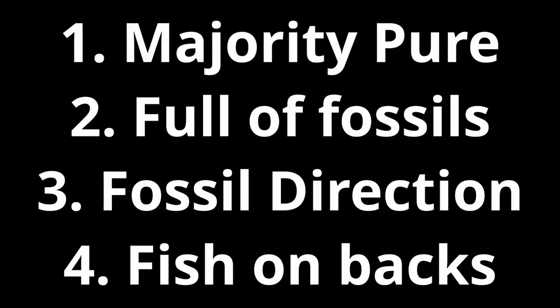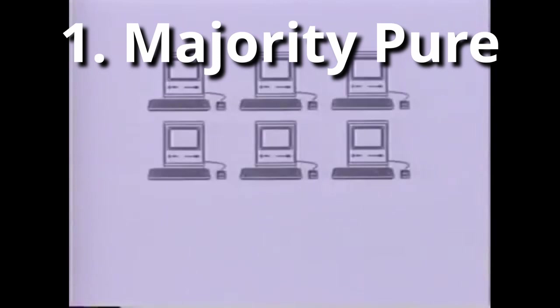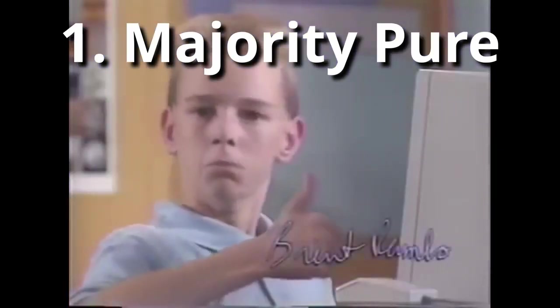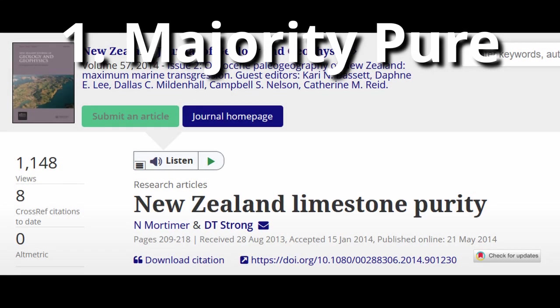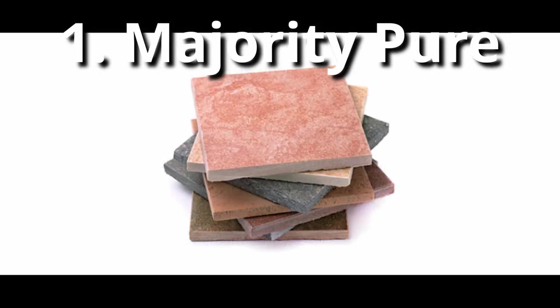And now we get to fish poop — somehow fish poop disproves the age of the earth. You just blew my mind. Now on to Indiana Joe's arguments: his first one is that the limestone you see at an outcrop is majority pure. I don't know where he got this, but I was able to find very easily a study in New Zealand of over 2,000 limestone samples, which discovered that almost half of the limestone sampled was impure by definition — meaning 50 to 85 percent CaCO₃ by volume. That's not very pure.